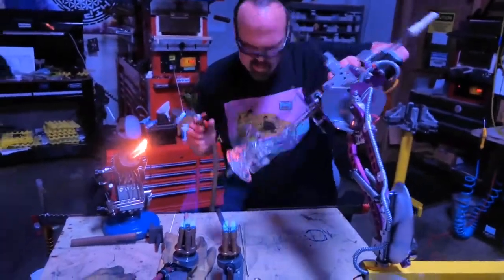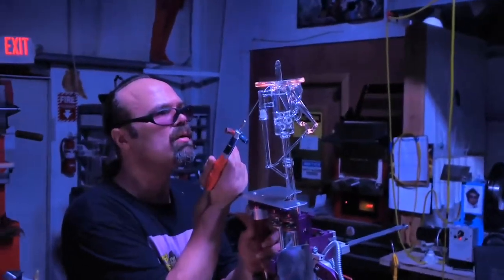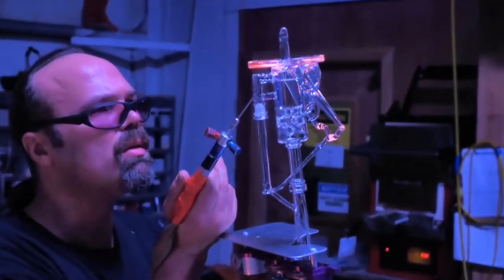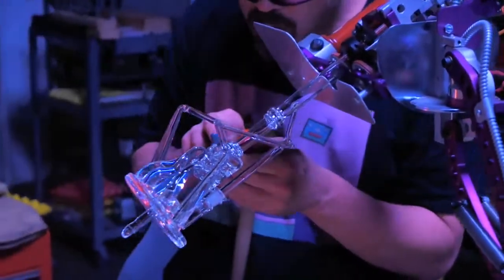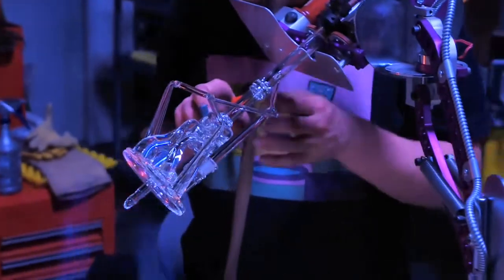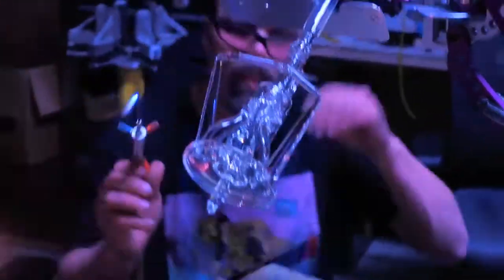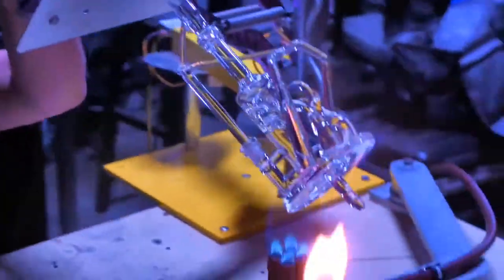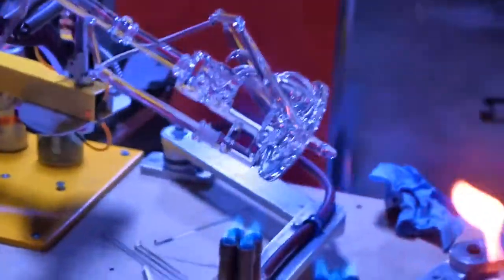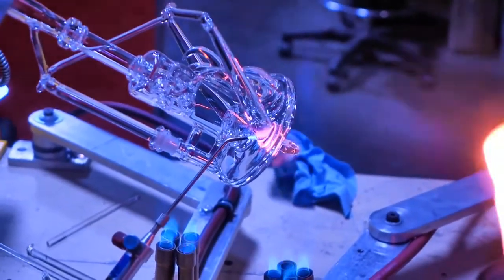He can move the piece into any position that he needs in order to see better or to let gravity help him out. He's also free to balance against his body, use two hands to control the torch, and use the hand torch while the piece is over the Bunsen.